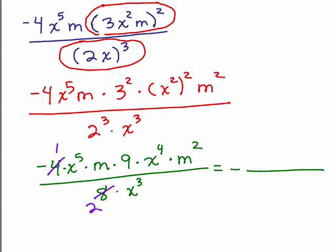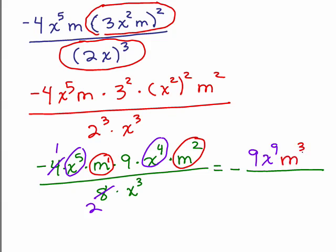Now, in the numerator, the only whole number I have here left is a 9. Take care of the 9. I've got my x to the 5th and I've got my x to the 4th. That will give me x to the 9th. I also have m and m squared. Remember, that means m to the first power. That's going to give me m cubed. And, of course, I also have the 9.